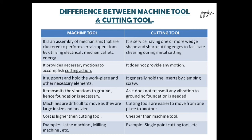Machine tools are bigger in size and heavier, so they are difficult to move from one place to another. While cutting tools are smaller in size — such as a drill bit or single point cutting tool — they are easier to move from one place to another; one can even keep them in a pocket, they are that small in size.